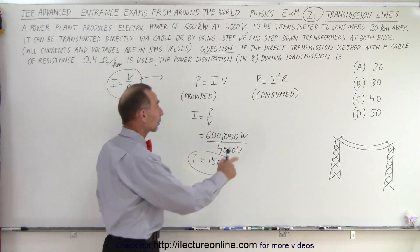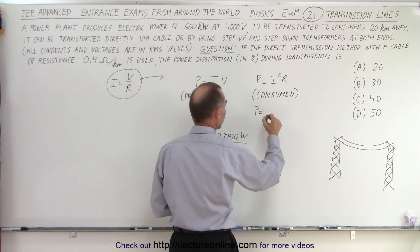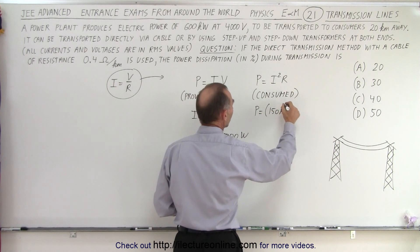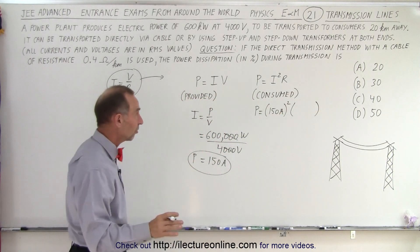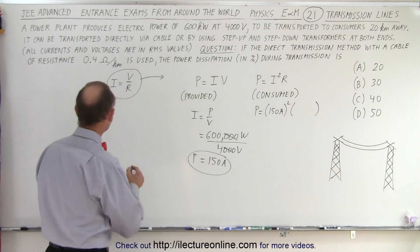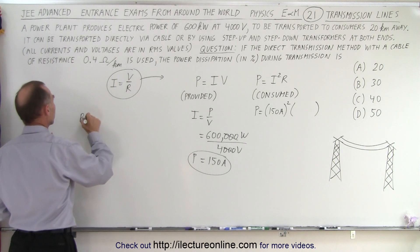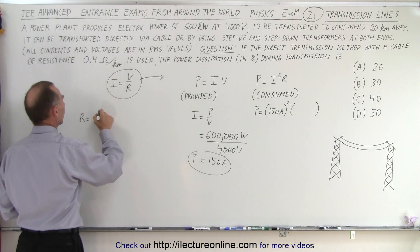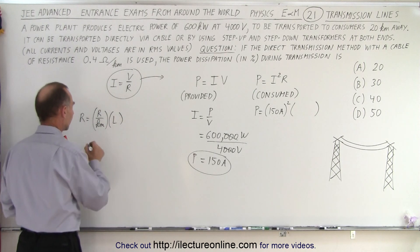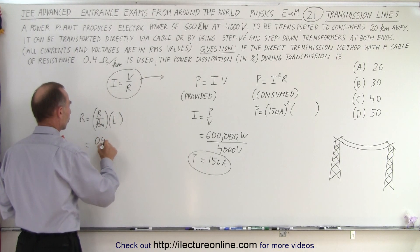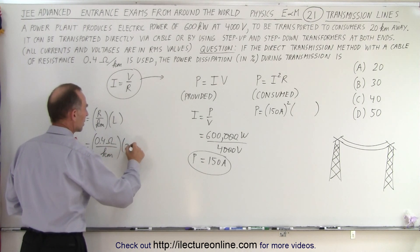Now to calculate the power consumed, we say the power is equal to the current squared, which is 150 amps squared, times the resistance. Now we have to calculate how much resistance there is on the cable. And they tell us that the resistance is 0.4 ohms per kilometer. So R is equal to the resistance per kilometer times the length of the line.